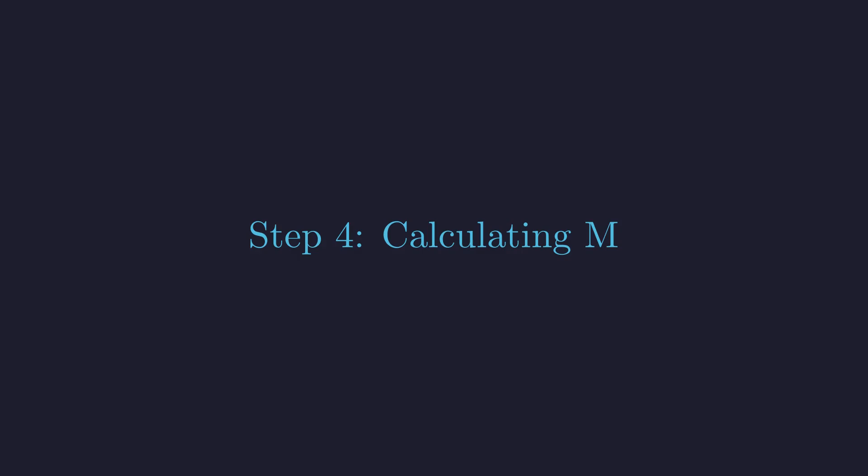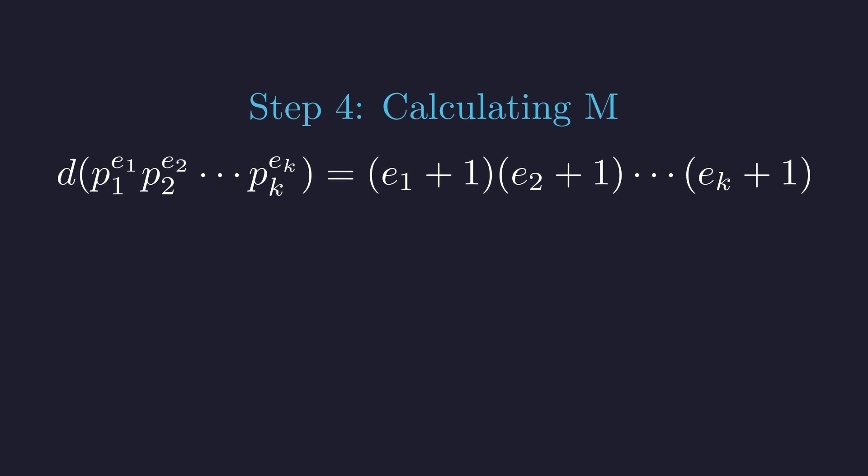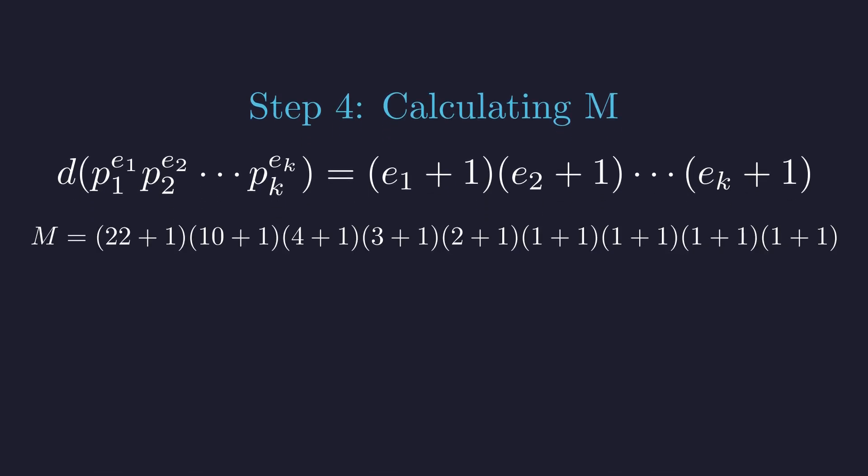Now comes the beautiful part. These exponents are about to tell us exactly how many divisors we have. Here's the key insight. For each prime, we can choose any power from 0 up to its maximum exponent. That's why we add 1 to each exponent, then multiply them all together. We build this product to find M. Let's evaluate these sums and see what we get, which simplifies to this product.